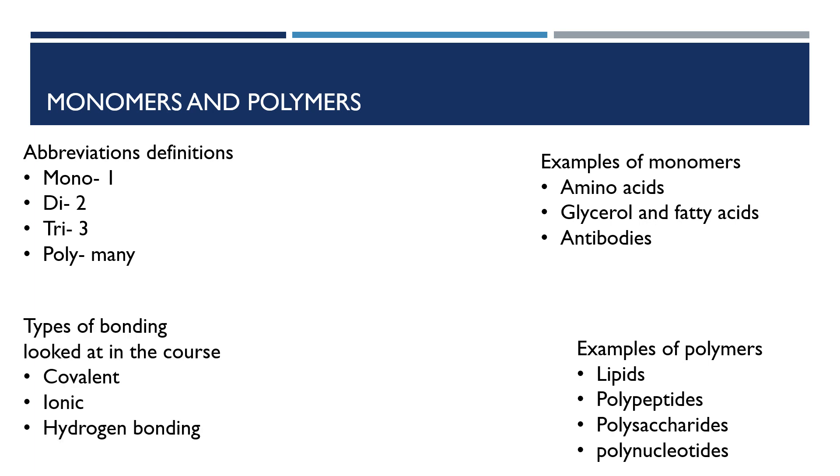What are the different types of bonding in the course? These come up more in proteins and protein synthesis, such as covalent bonding, ionic bonding, and hydrogen bonding.